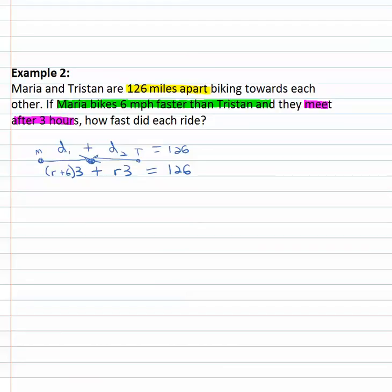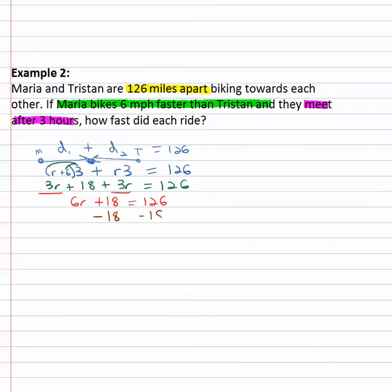We have a little simplifying to do. First, distribute through the parentheses: three R plus eighteen, plus three R, equals one twenty-six. Combining like terms gives six R plus eighteen equals one twenty-six. Subtracting eighteen from both sides gives six R equals one hundred eight. Dividing both sides by six gives R equals eighteen.